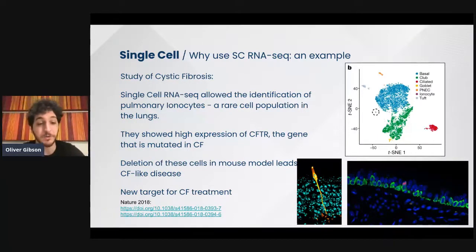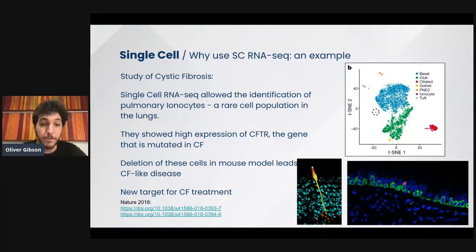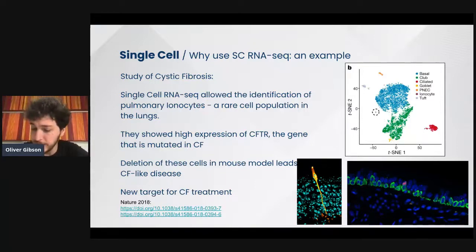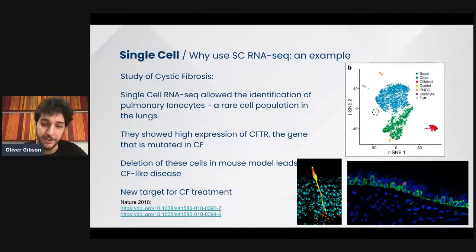Further analysis showed that deletion of these cells in mouse models leads to cystic fibrosis disease. That's been a really interesting and important step for the treatment of cystic fibrosis. This is just one example of the power and capacity that single-cell RNA-seq analysis has, and it really shows the capacity of single-cell for finding rare cell populations.